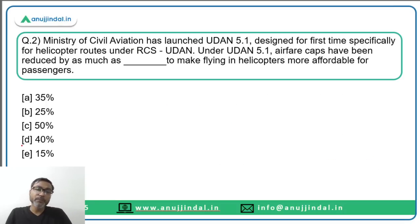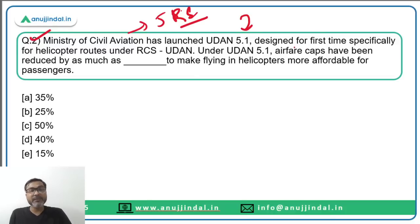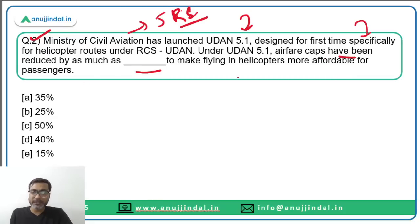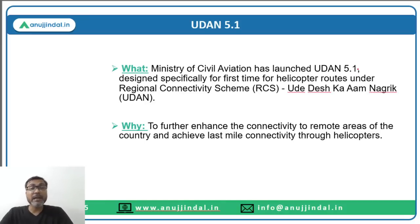Question number two: Ministry of Civil Aviation, headed by Jyotiraditya Scindia, has launched UDAN 5.1, which has been designed for the first time specifically for helicopter routes. Under UDAN 5.1, airfare caps have been reduced by a certain percentage to make flying in helicopters more affordable for passengers. UDAN stands for Regional Connectivity Scheme.